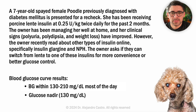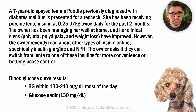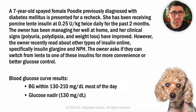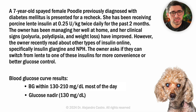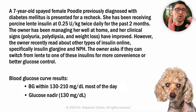We have a seven-year-old spayed female poodle with diabetes that is presented for a recheck. She has been receiving Lente insulin at 0.25 units per kilogram twice daily for the past two months. The patient is doing well at home and her clinical signs — PU, PD, weight loss — have improved. However, the owner recently read about other types of insulin online, specifically insulin glargine and NPH. The owner asked if they can switch from Lente to one of these insulins for more convenience or better glucose control.